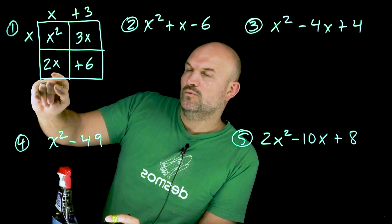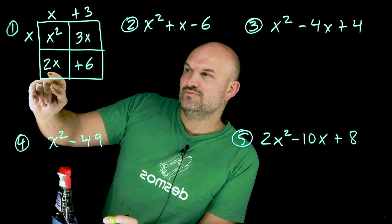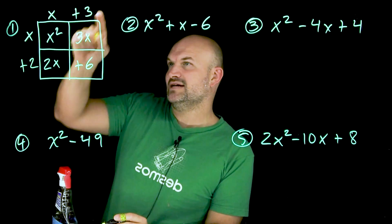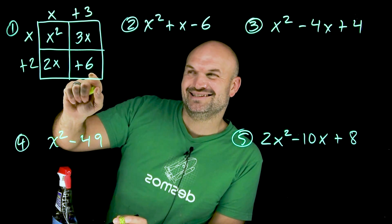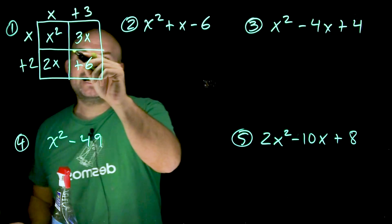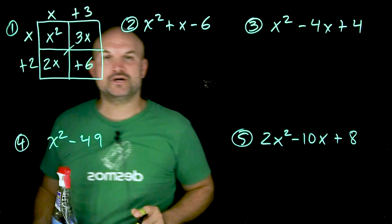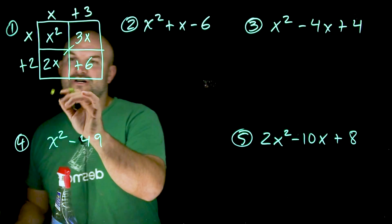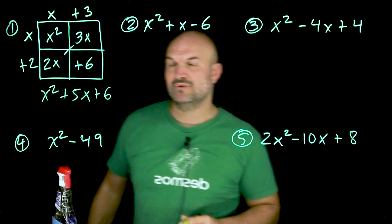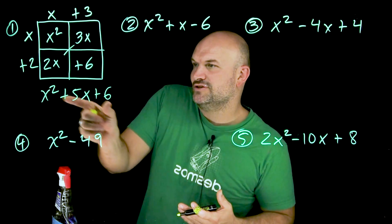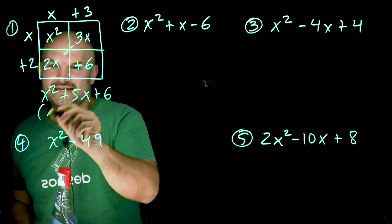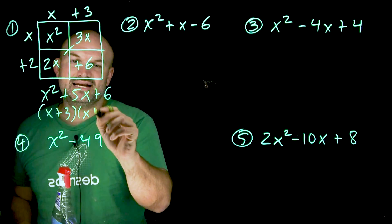Over here I have a width of x — x times what gives me 2x? That's a positive 2. And we notice that 2 times 3 has to equal 6, which it does. That is the factored form. If I combine the two middle terms I get x² + 5x + 6, so the factored form of x² + 5x + 6 is (x + 3)(x + 2).